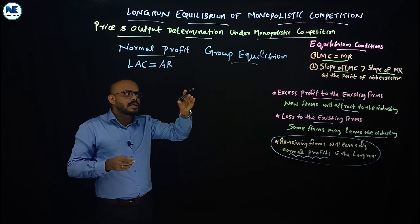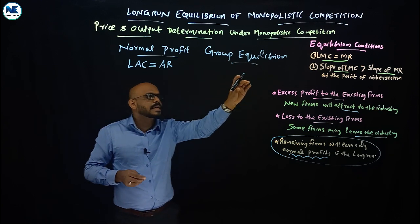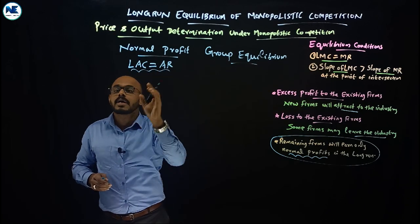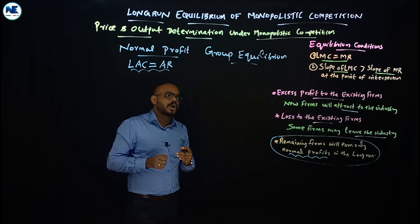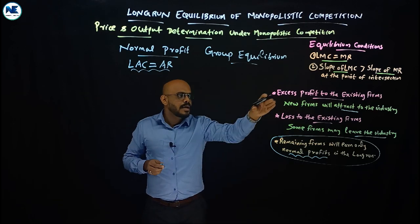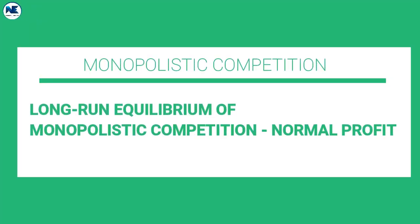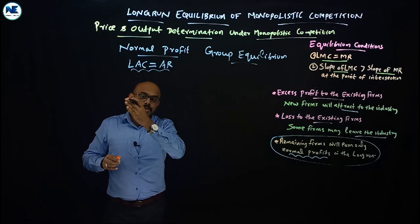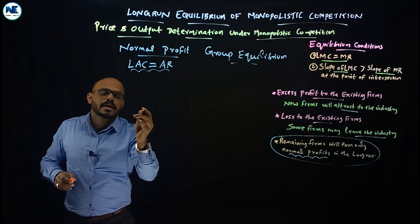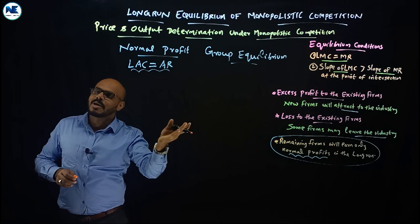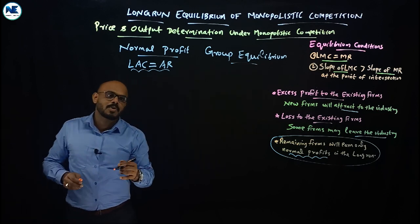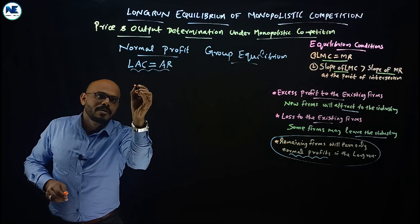The equilibrium conditions are: long run average cost equals average revenue, which indicates normal profit. This is the group equilibrium concept. We can now draw the figure. Note that in the long run we consider long run marginal cost, long run average cost, and short run average cost together. Listen carefully as we draw the figure.